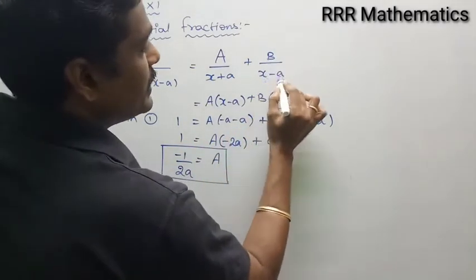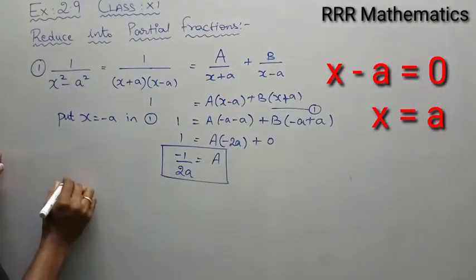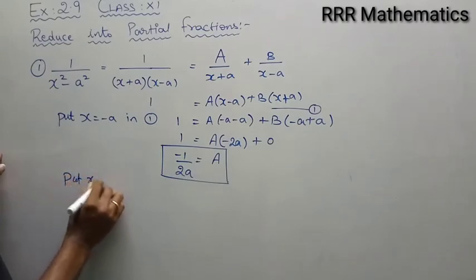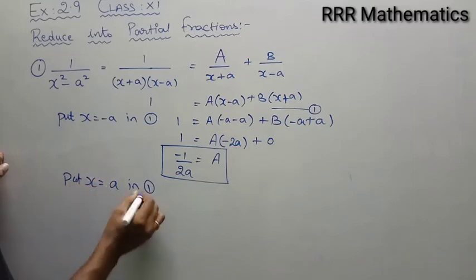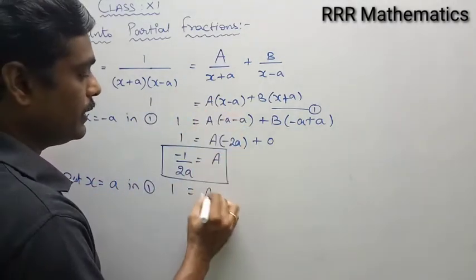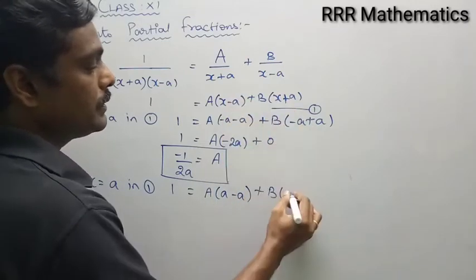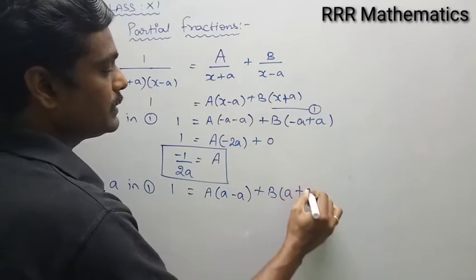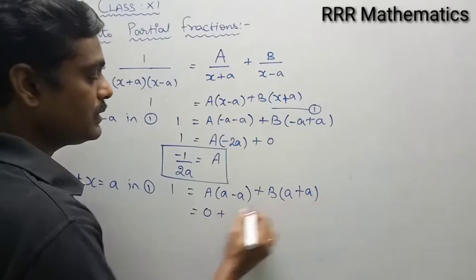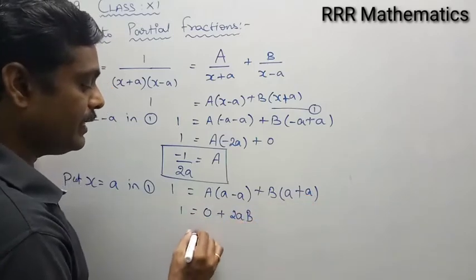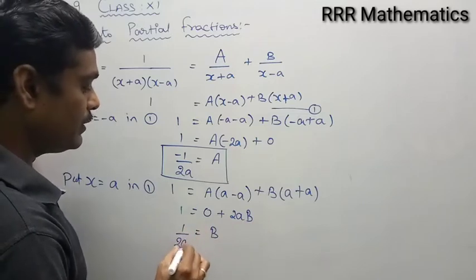Similarly, equate the denominator factor for B: set x minus a equal to zero, giving x equal to a. Substitute x equal to a: we get 1 equals A times zero plus B times a plus a. That gives 1 equals B times 2a, so capital B equals 1 divided by 2a.